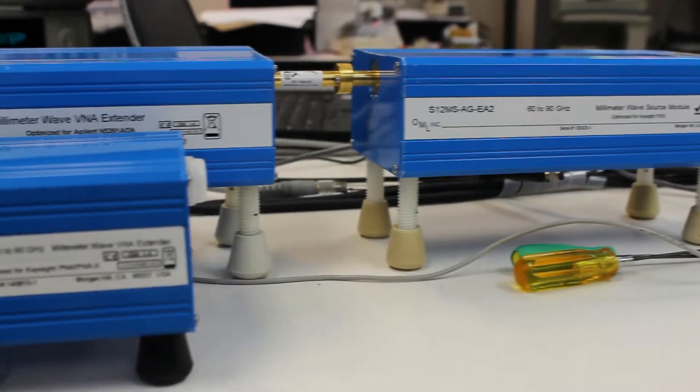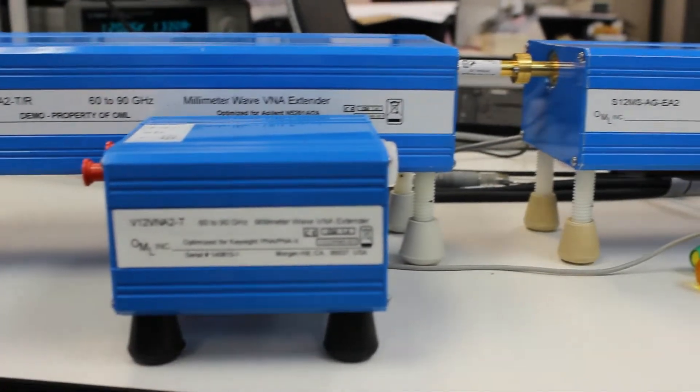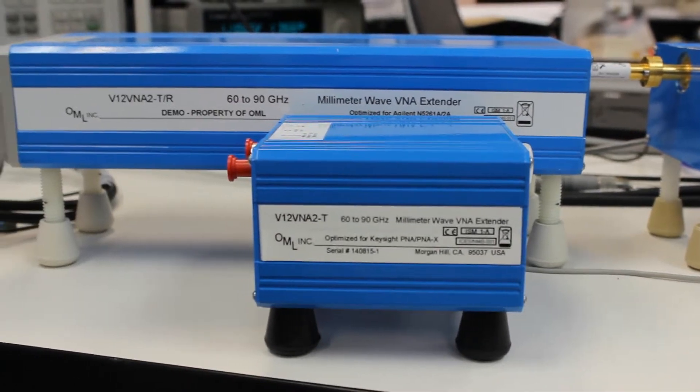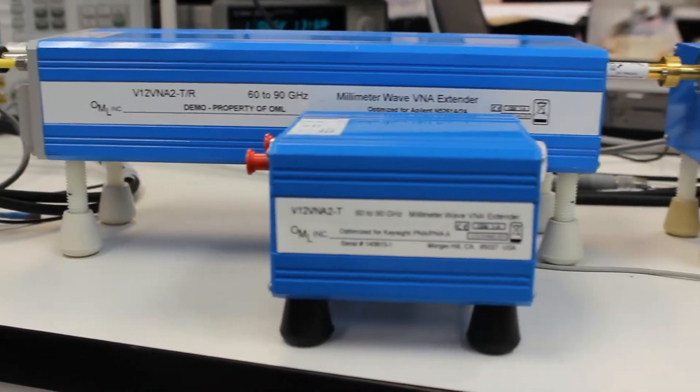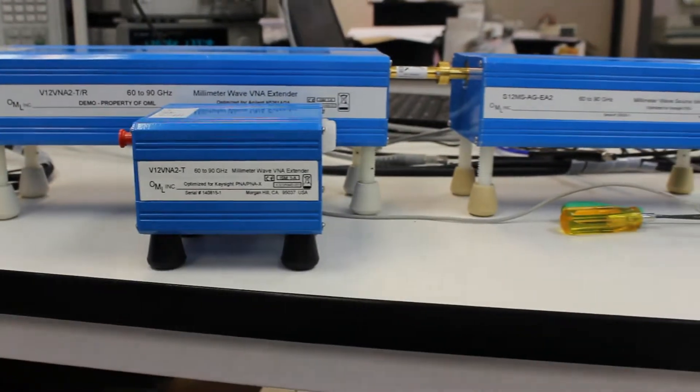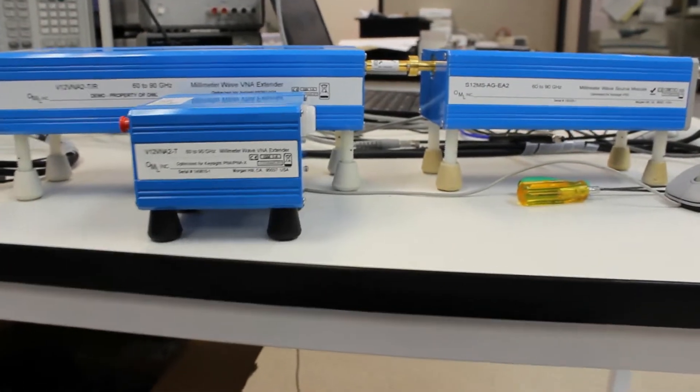In this setup, either an OML TR or T module can be used along with a Keysight PNA-X. The PNA-X will provide a visual of both the dynamic range and full band frequency response.